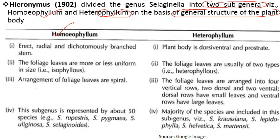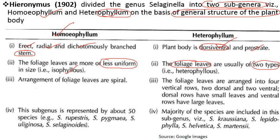In the Homeophyllum subgenus, the plant body is erect, radial, and dichotomously branched. Foliage leaves are more or less uniform — isophyllous — and arranged spirally. In the Heterophyllum subgenus, the plant body is dorsiventral and prostrate. Foliage leaves are of two types — heterophyllous — arranged in four vertical rows: two dorsal rows with smaller leaves and two ventral rows with larger leaves.